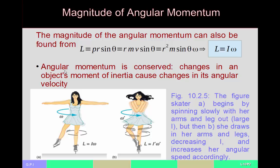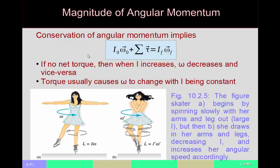Angular momentum being conserved also means that if you change an object's moment of inertia, you have to change its angular velocity to compensate. For example, a figure skater spinning slowly with her arms extended will decrease her moment of inertia as she brings her arms in, because more mass is concentrated near the axis of rotation. As a result, her rate of spinning must increase to conserve angular momentum — she speeds up as she does that.